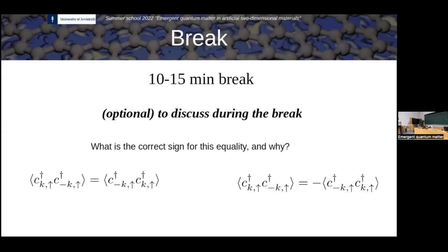That's a good argument. Any other thoughts? That's perfect. So that's maybe one of the simplest ways of getting this. You remember that the creation and annihilation operators had anti-commutation relations. If you switch two operators that have different quantum numbers, you just get a minus sign. So you can switch them on the right and get the minus sign automatically.